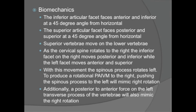Biomechanically, for rotation, as the cervical spine rotates to the right, the inferior facet on the right moves posterior and inferior while the left facet moves anterior and superior. With this movement, the spinous process rotates left as well. To produce a rotational PAIVM to the right, pushing on the spinous process to the left will mimic right rotation.